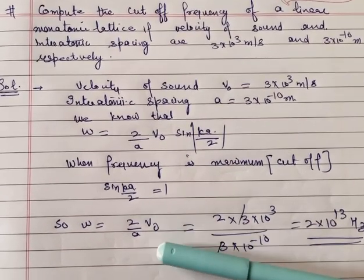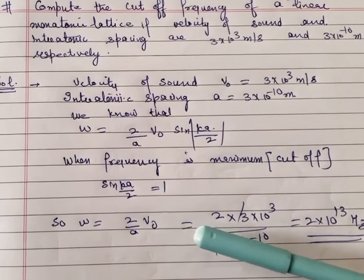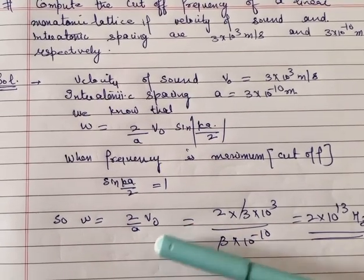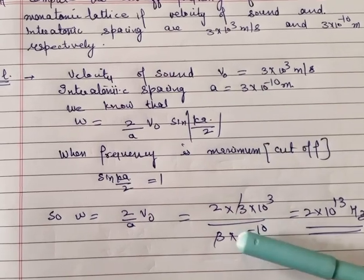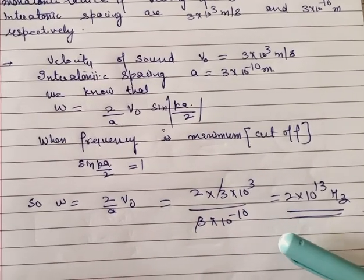Put all the values of v naught and a that are given to us here. When we put these values, we get the answer 2×10¹³ hertz.